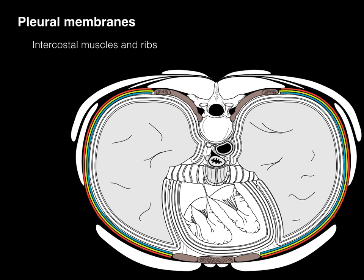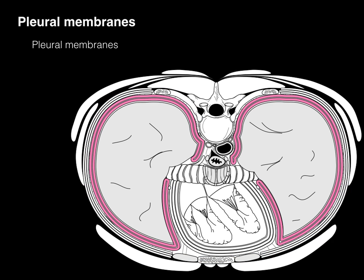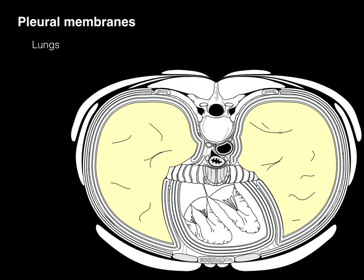Pleural membranes are found lining the lungs. In this cross-section, we can see the external intercostal in red, internal intercostal in yellow, and innermost intercostal in blue, with the ribs in brown surrounding where the pleural membranes are located internally. These are serous membranes that surround the lungs and contain fluid to help them move without friction. The lungs receive and take away air via the bronchial tree.